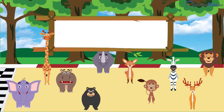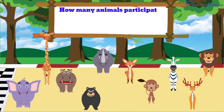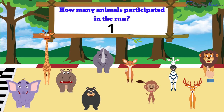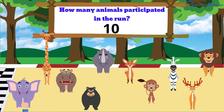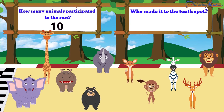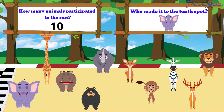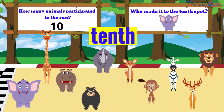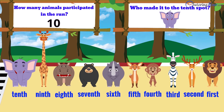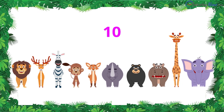Now imagine somebody asks you, how many animals participated in the run? You'd count them — one, two, three — and obviously say ten. But what would your answer be if someone asked you who made it to the tenth spot? The answer would be the elephant. The word tenth talks about the animal in the particular position in relation to the other animals.